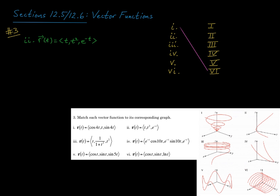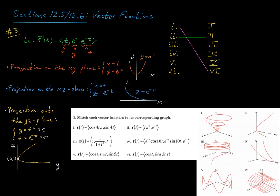Let's look at part 2. R of t is t comma t squared comma e to the negative t. I'm going to think in terms of parametric equations and look at the projections of this curve onto the coordinate planes to get a feel for the overall shape. So x is t, y is t squared, and z is e to the negative t.